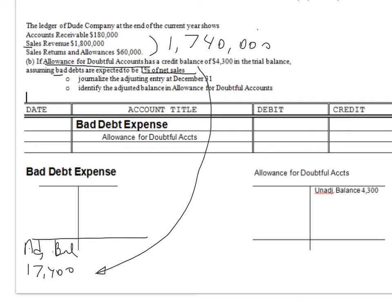A couple of questions. How did I know that it's bad debt expense and not the allowance? Remember, net sales will be on your income statement. What other account, out of bad debt expense or the allowance, is present on the income statement to take the 1% from? The only one that is there is bad debt expense. Therefore, I want this balance to be on the income statement. How did I know to put it on the debit side and not the credit side? The normal side for an expense is a debit — that's how I knew.